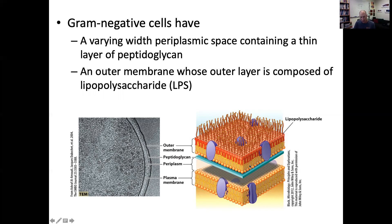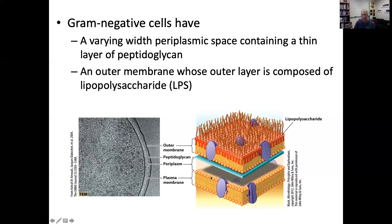The inner leaflet of that outer membrane — that outer bilayer — is made of similar phospholipids to the inner membrane or cytoplasmic membrane, whereas the outer leaflet is made of a very different kind of lipid. So there are two membrane layers: an inner membrane and an outer membrane, with a thin peptidoglycan layer in between. The space between the two membranes in a gram-negative bacteria is referred to as the periplasm, and this is typically larger than it is in a gram-positive bacteria.